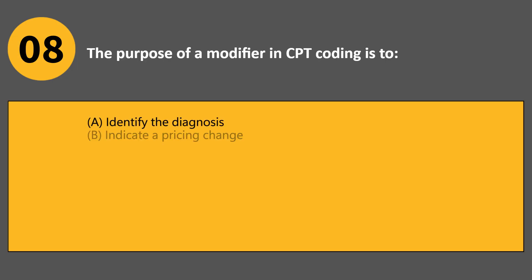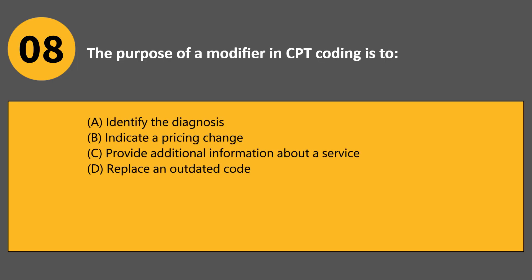The purpose of a modifier in CPT coding is to: A. Identify the diagnosis. B. Indicate a pricing change. C. Provide additional information about a service. D. Replace an outdated code. Answer C. Modifiers provide extra details such as service complexity or specific circumstances.